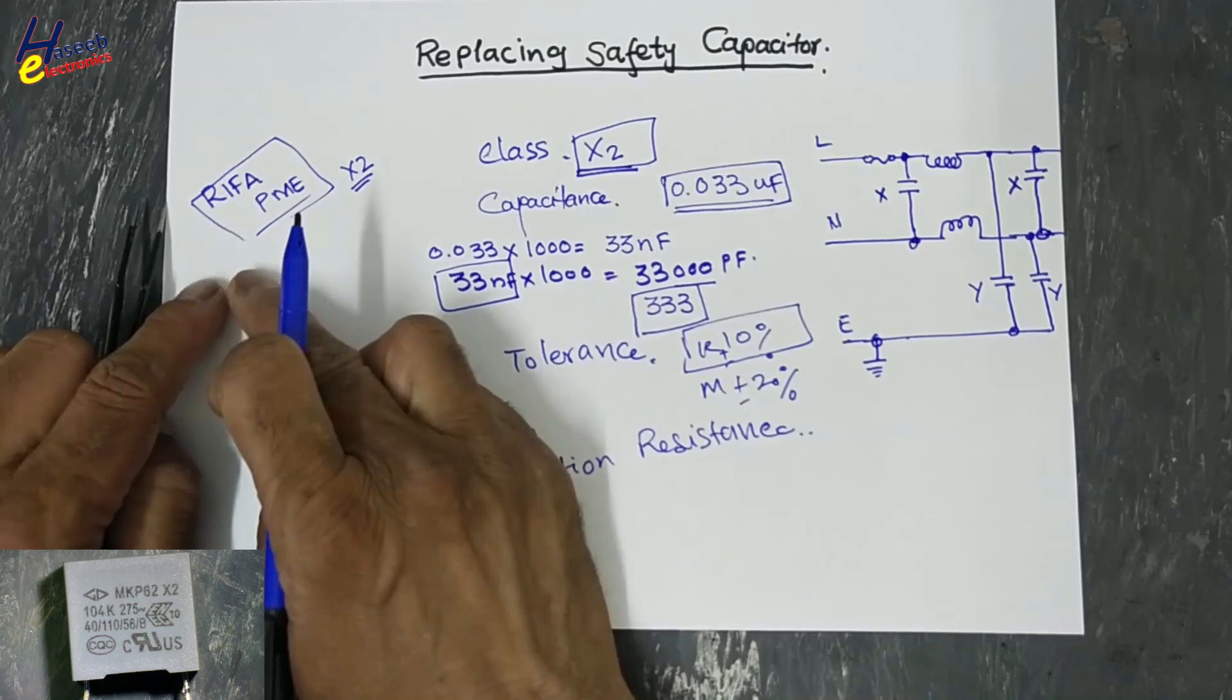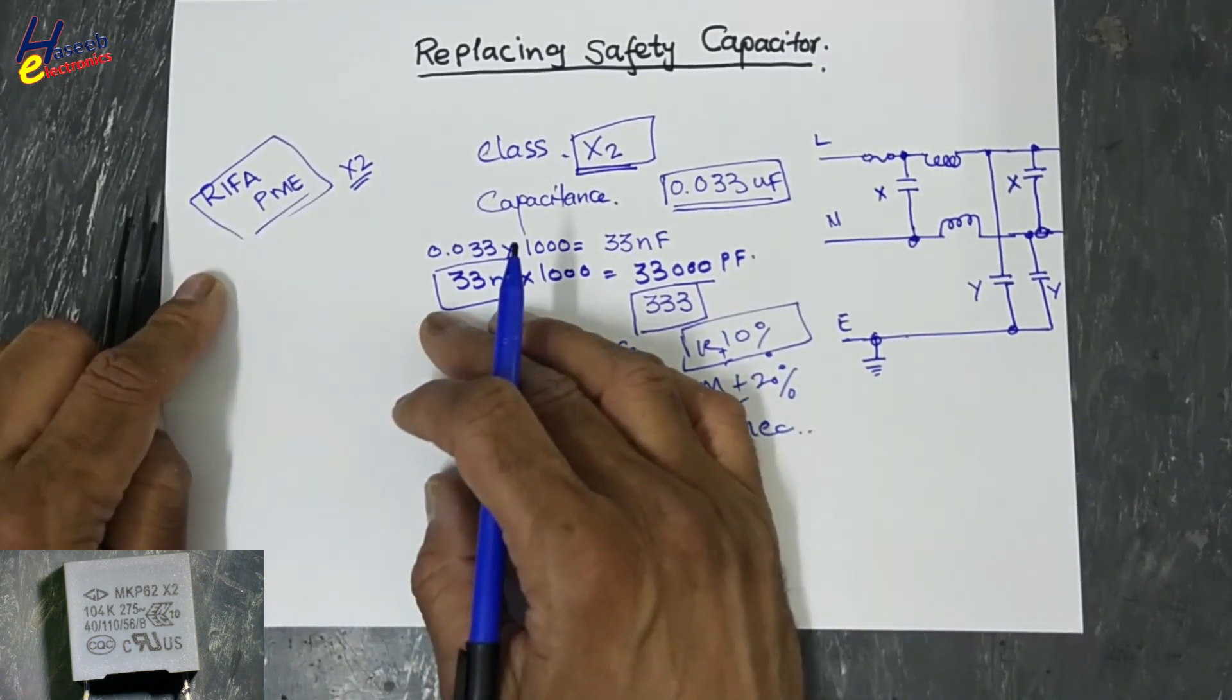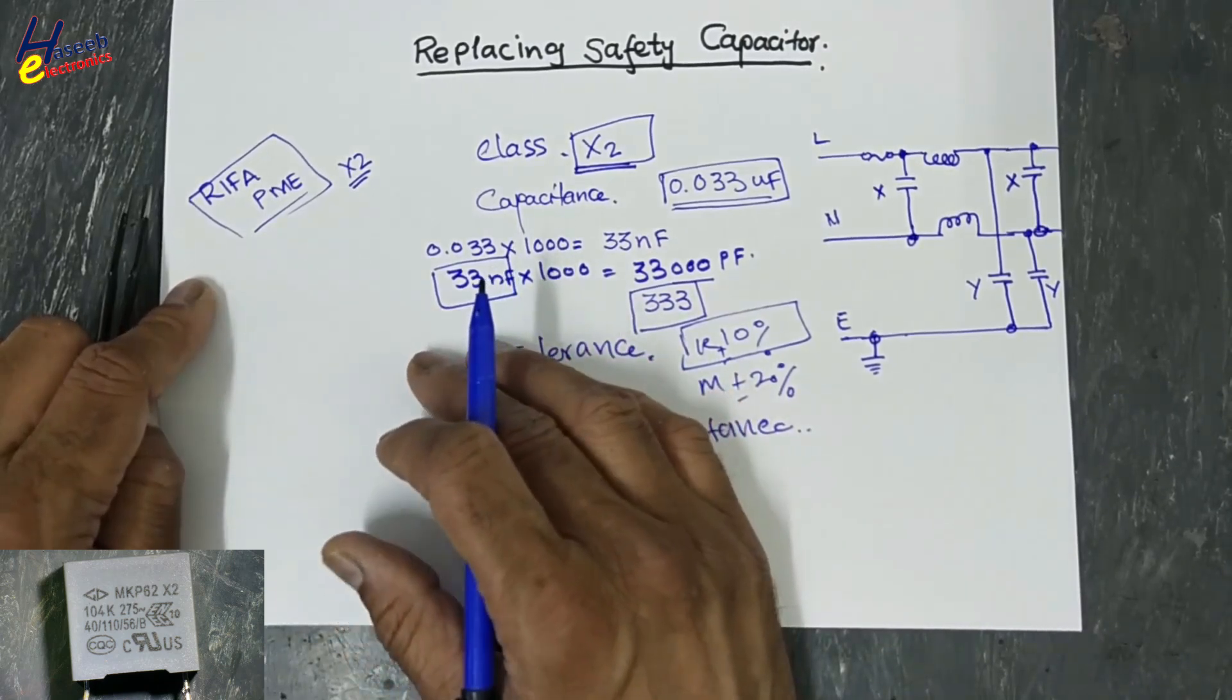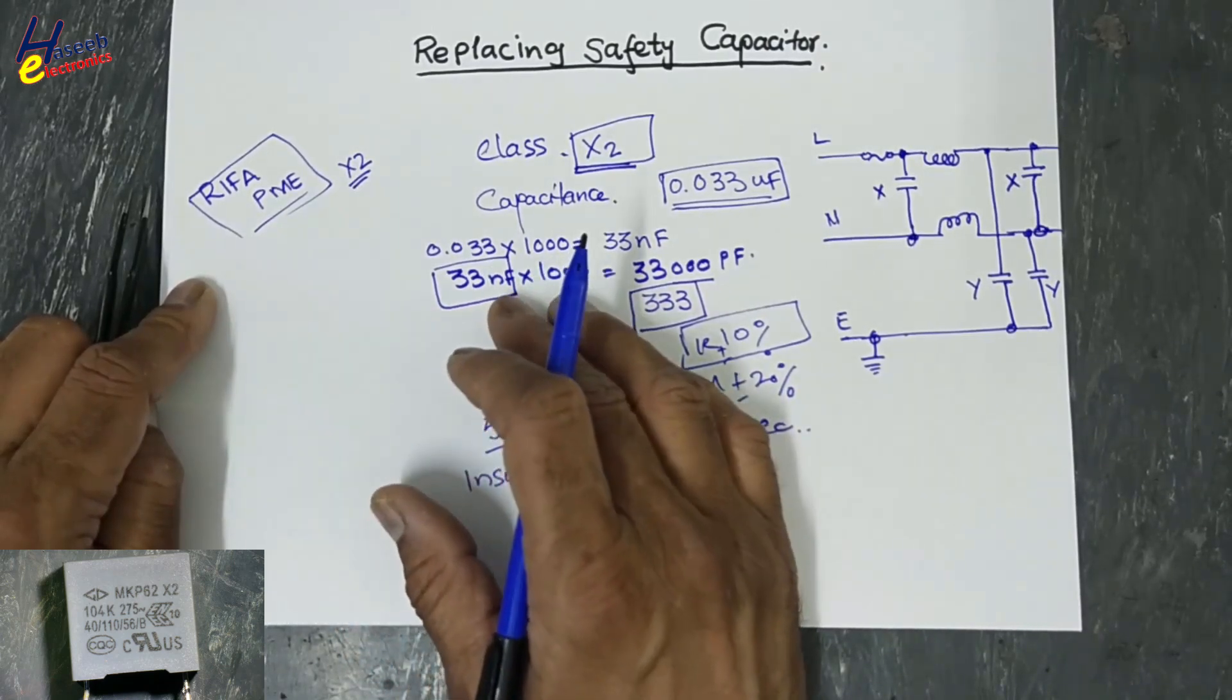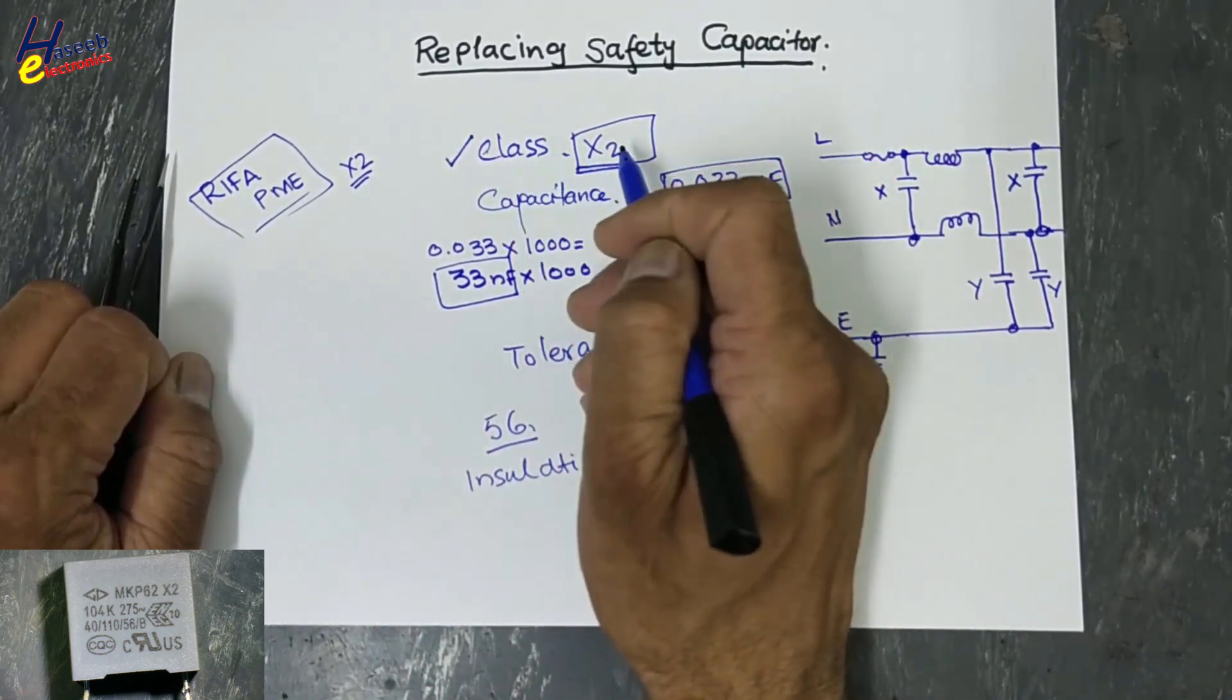If RIFA capacitor is using 12,000 mega ohms at rated voltage, if you are selecting this MKP62, it will produce 15,000 mega ohms. So we will select this one. First point: carefully select the same classification.